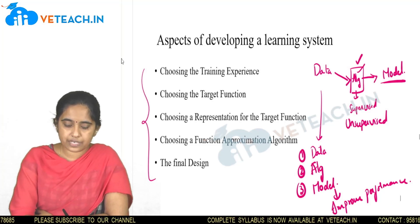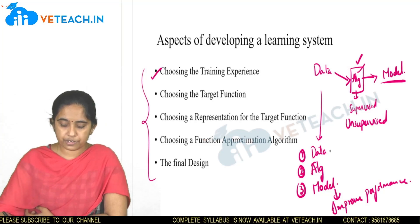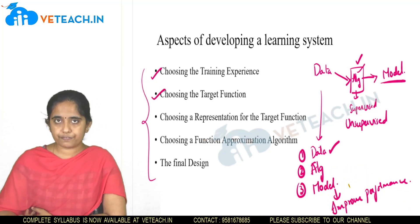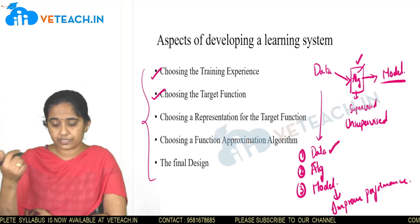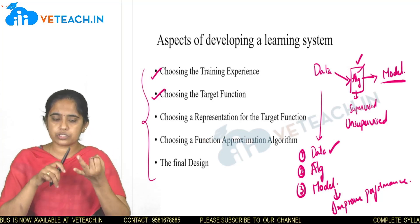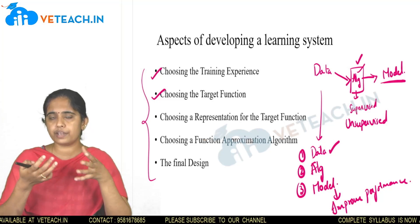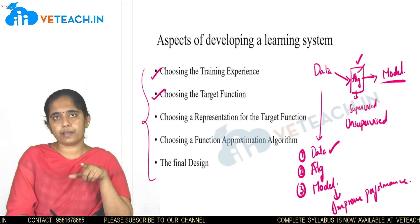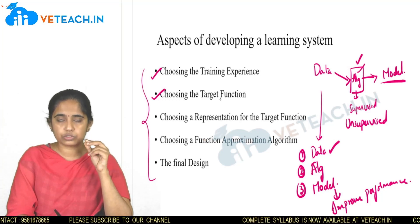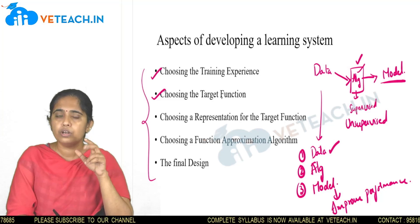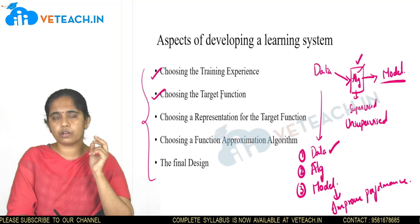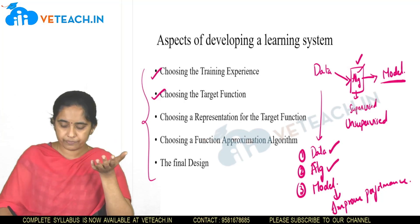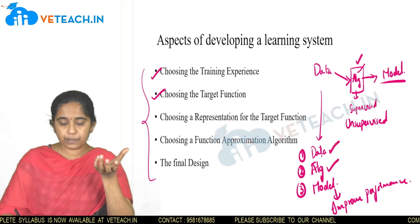Coming to our syllabus, the aspects involved are: first, choosing the training experience — the data we take to generate a model; second, choosing the target function — the final model we are generating, meaning what algorithm you take, whether classification, regression, or clustering. The choice depends on the type of data we take. For example, whether to use K-means clustering, a decision tree, or simple linear regression — that is choosing the target function.